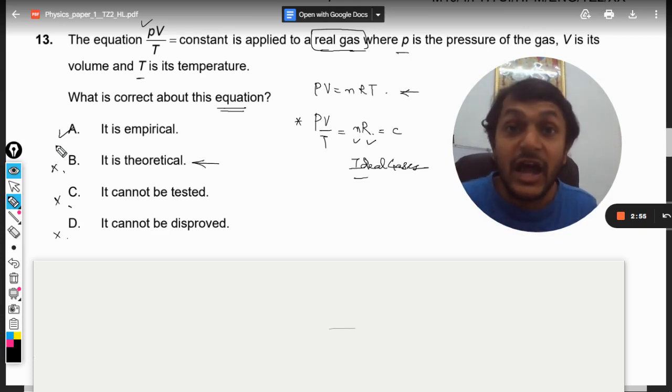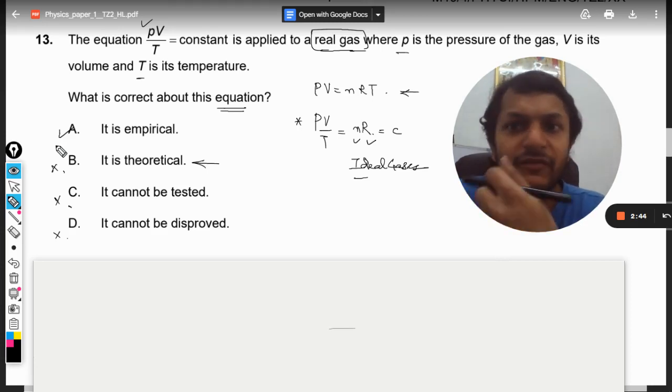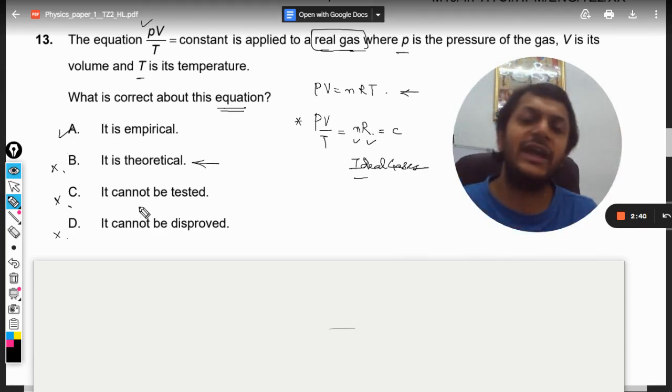That practically we have done this thing, we tried to do this thing on a real gas and we found it to be correct. So we can say that this equation is purely empirical. It does not have any theoretical background. So we have applied this equation and we found it to be correct, so option A will be correct.